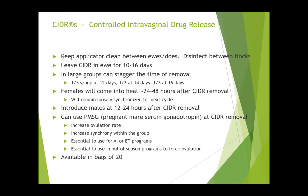PMSG — Pregnant Mare Serum Gonadotropin — in this country is either Novormon or Folligon. It can be used at CIDR removal during the natural breeding season, though it certainly doesn't need to be. It will tend to increase ovulation rate, so if you have prolific sheep and you don't want to have five lambs, you probably don't want to use PMSG. It does increase synchrony within the group — the ewes are going to come into heat even tighter, maybe all between 18 and 36 hours. We use it for AI and embryo transfer programs because we need all the ewes in a group to be in a very tight heat. It is essential to use in out-of-season programs to force ovulation, and we'll talk about that when we talk about out of season.